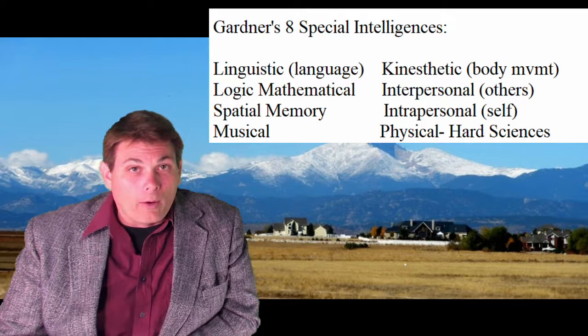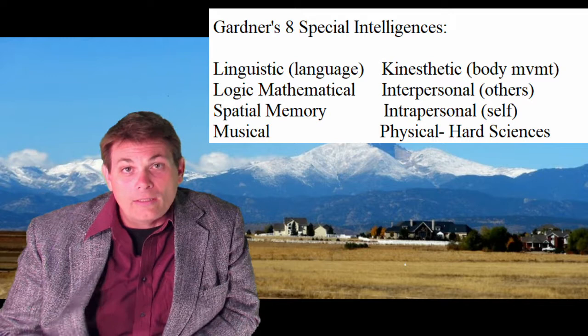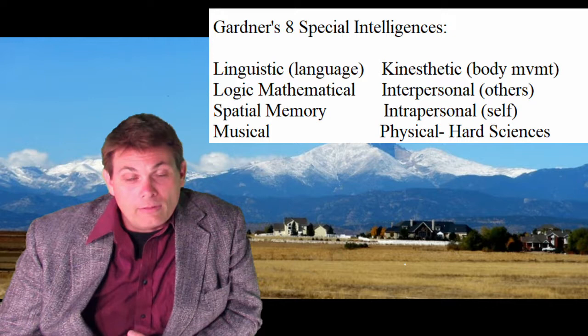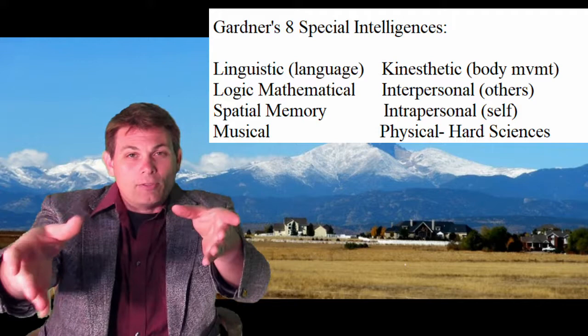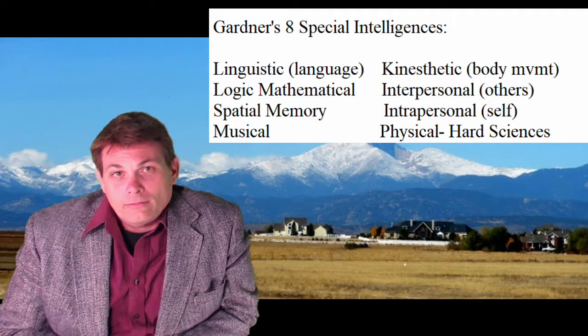Gardner, another researcher, said that wasn't enough. Howard Gardner came up with eight different intelligences: linguistic — how good someone is with words; logical-mathematical — how well someone is with math; spatial — how well someone can rotate things in their minds, like picking up an image, turning it over mentally, and setting it back down. There's a test on spatial memory at the end of this, and spatial memory is linked to better scores in chemistry — being able to turn those molecules around inside your head.